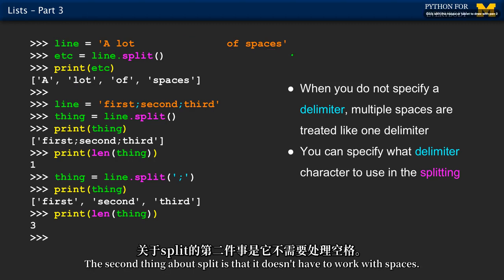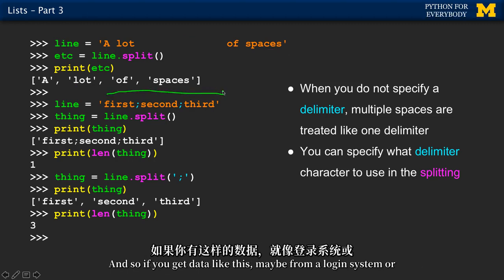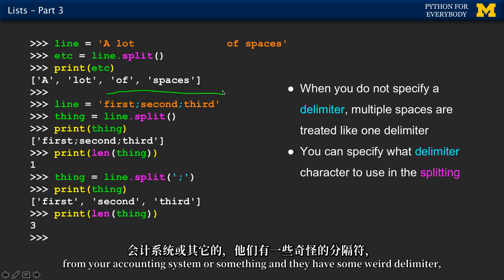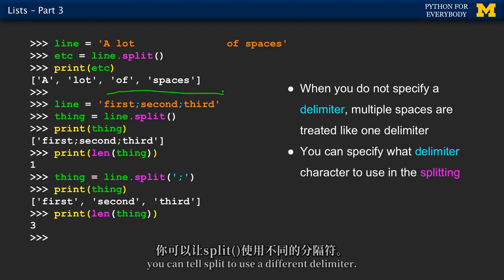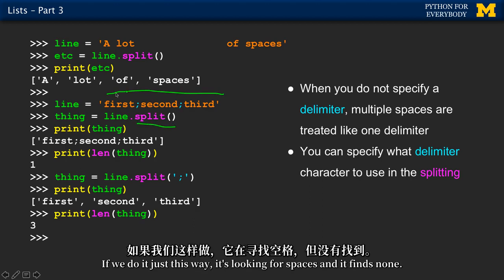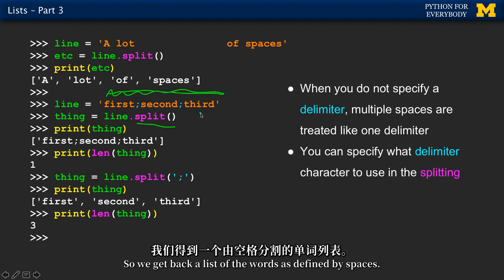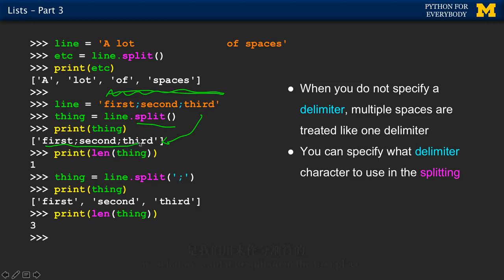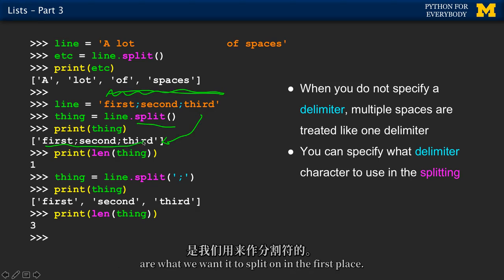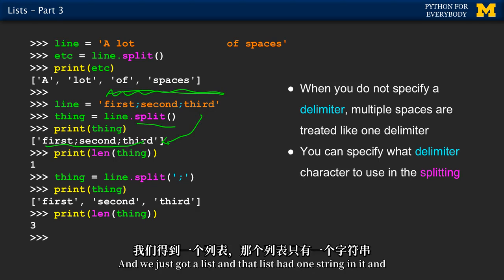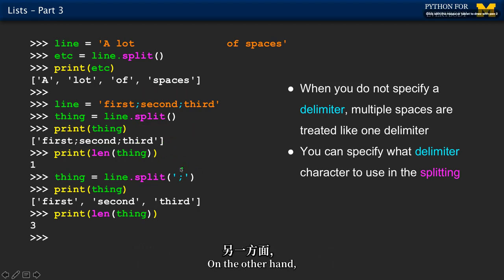Split doesn't have to work with spaces. If you get data from a logging system or accounting system that has some weird delimiter, you can tell split to use a different delimiter. If we just call split normally, it's looking for spaces and finds none - so we get back a list where the whole string is one element, because it doesn't realize semicolons are the intended delimiter.